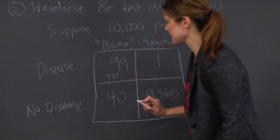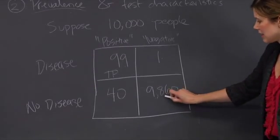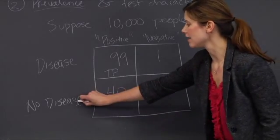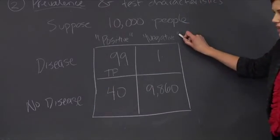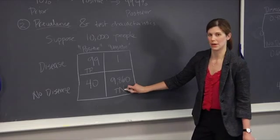Conversely, about 9,860 people will not have the disease and will also have a negative test. And this is referred to as the number of true negatives in the population.